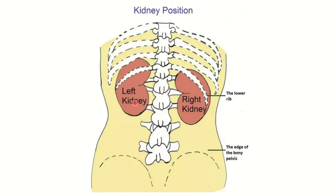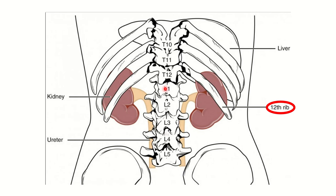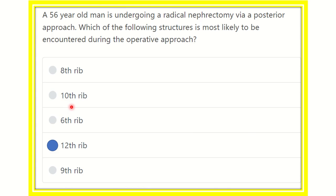For both the right and left kidneys, the 12th rib is the relevant landmark. The left kidney is also related to the 11th rib, but for both kidneys the 12th rib is the common relationship. In the picture we can confirm: the 12th rib is related to both kidneys, while the 11th rib is related only to the left kidney.